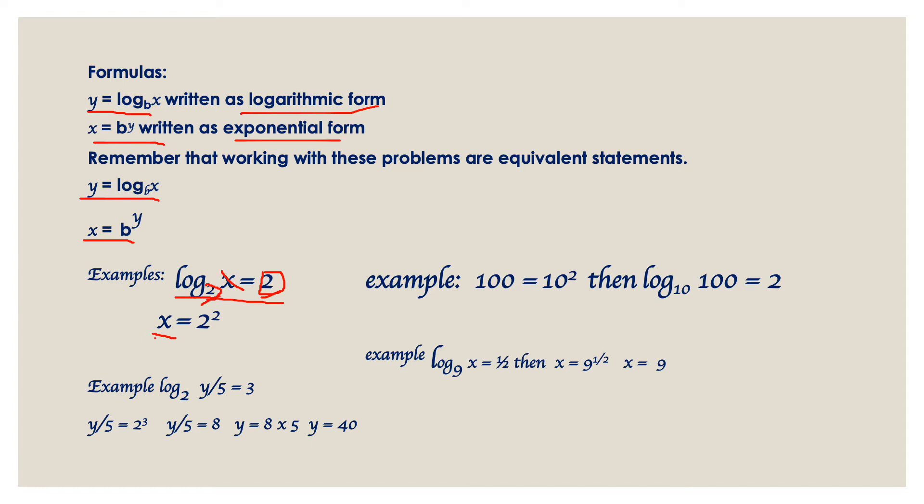So x equals the base to the exponent. Base of 2 raised to the power of 2, so that means whatever your exponent, you have 2 times your base. So our x value here is 4. 2 times 2 is 4.